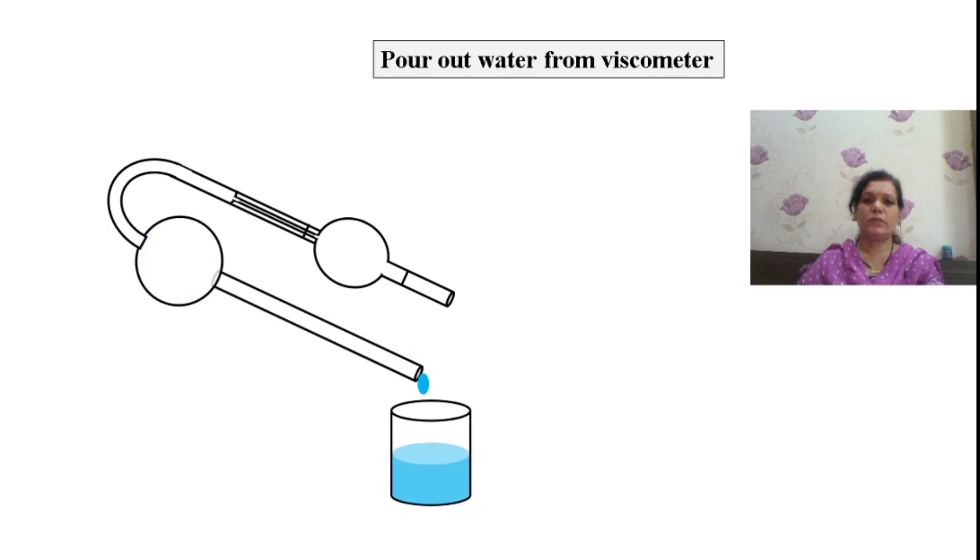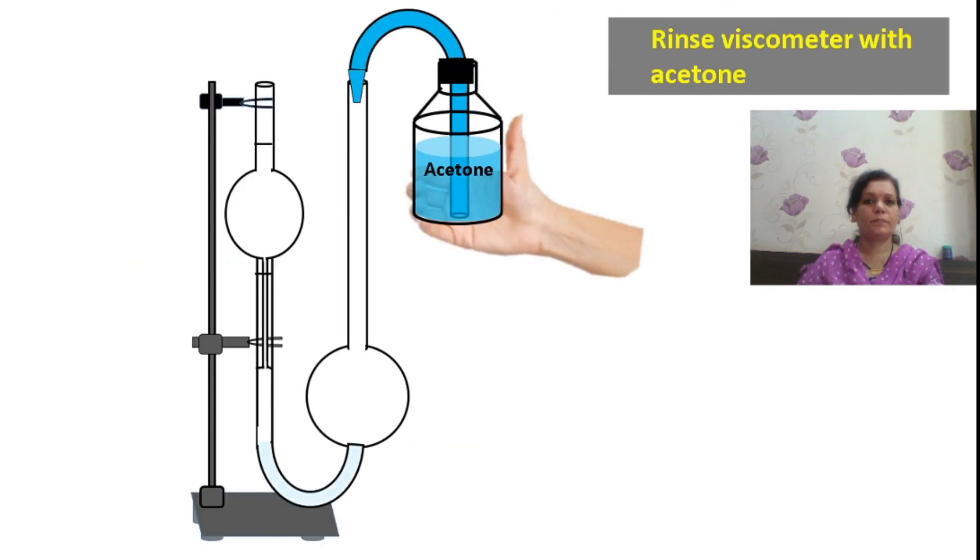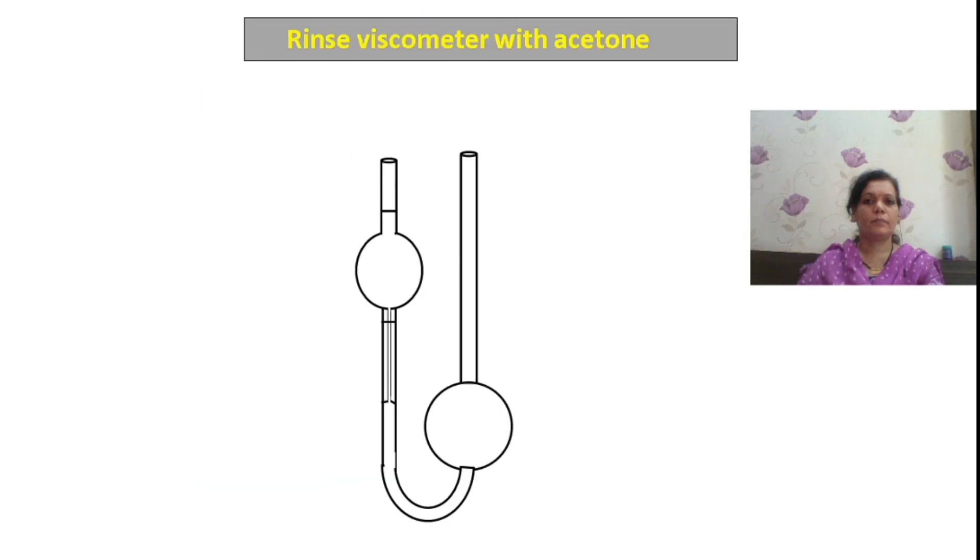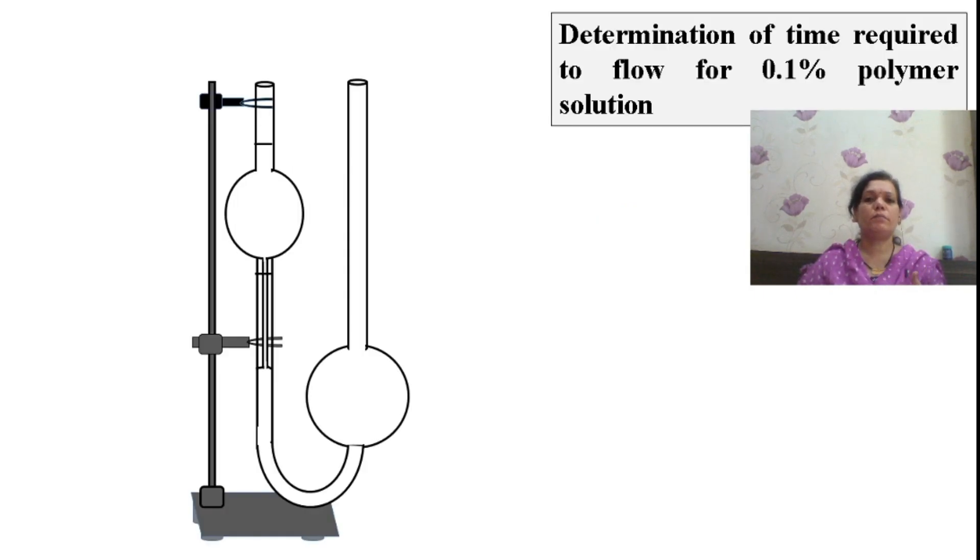Remove the water from the viscometer, rinse with acetone and dry with hair dryer. You have to repeat this procedure after every utilization of solution, after every measurement of time of flow.